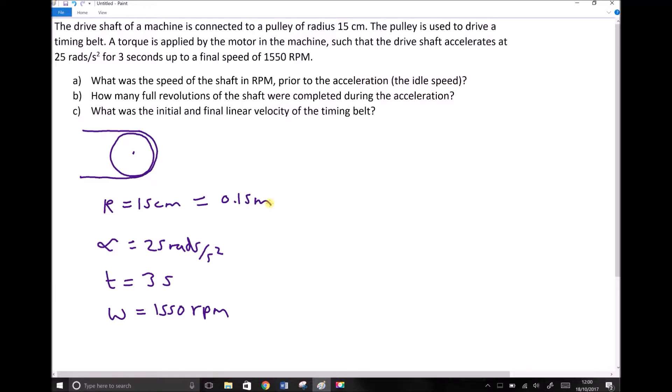However, our final velocity omega is not in SI units. That needs to be converted to rads per second. And you'll recall that our conversion factor is to times by 2 pi to get from revolutions to radians and then divide by 60 to get from minutes to seconds.